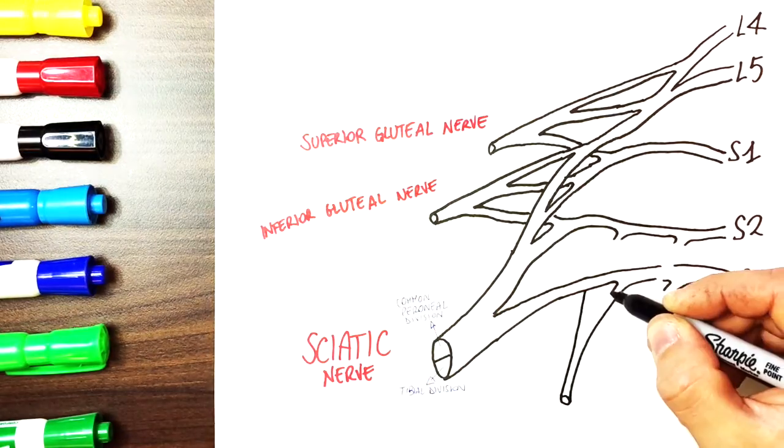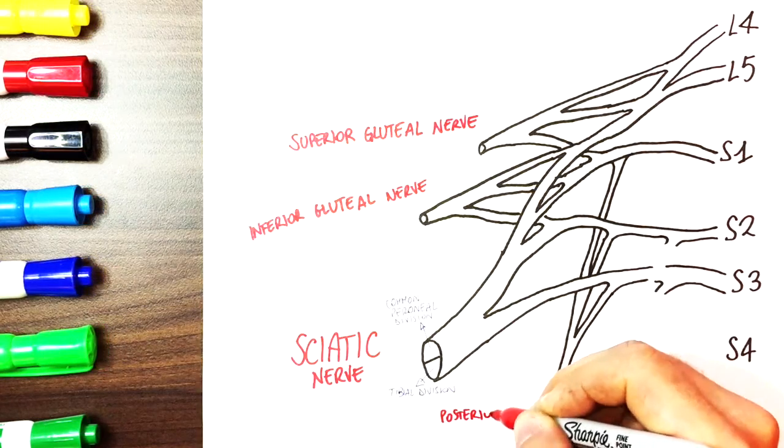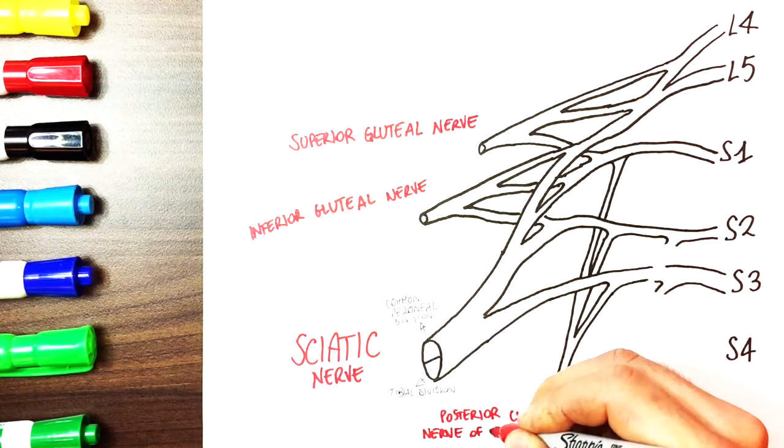From S1, S2 and S3 we have the posterior cutaneous nerve of the thigh, also called posterior femoral cutaneous nerve of the thigh.